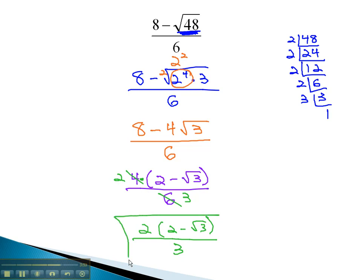This will work as our final solution. However, if you wish, you can distribute the 2 through to get 4 minus 2 root 3 over 3. And this answer will work as well.